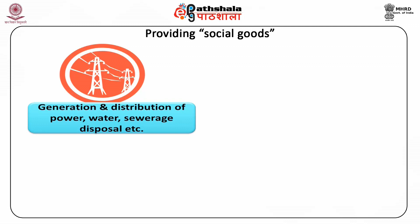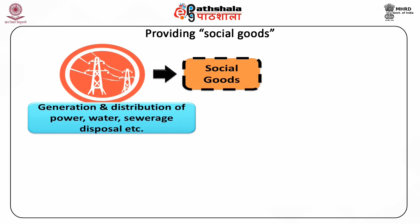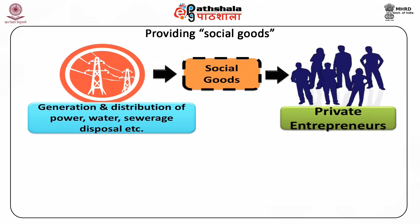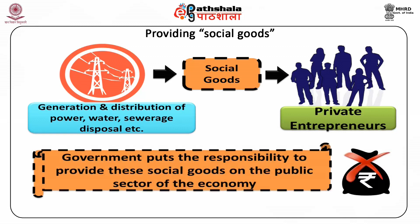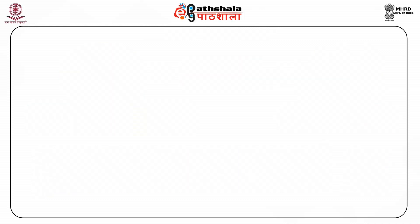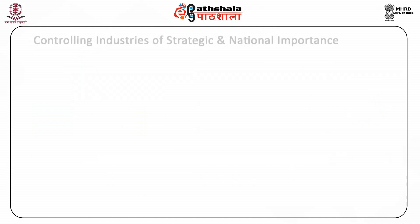Providing Social Goods: Generation and distribution of power, water, sewerage disposal etc. are social goods and private entrepreneurs do not find any incentives in investing in these social goods. In such cases, the government puts the responsibility to provide these social goods on the public sector of the economy.